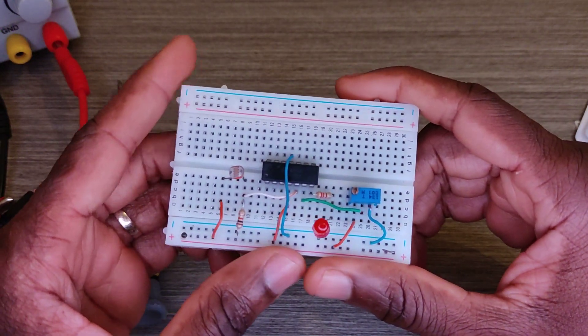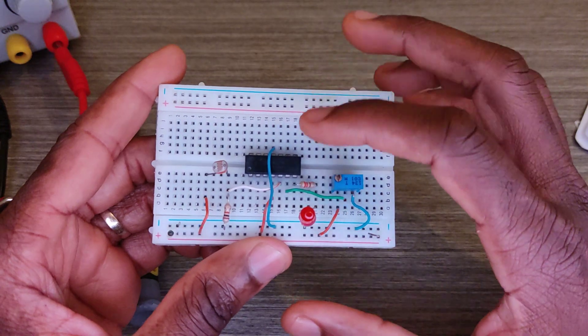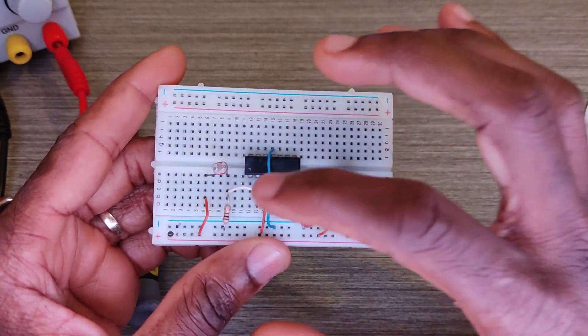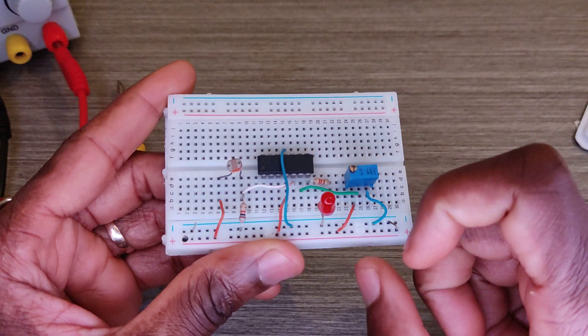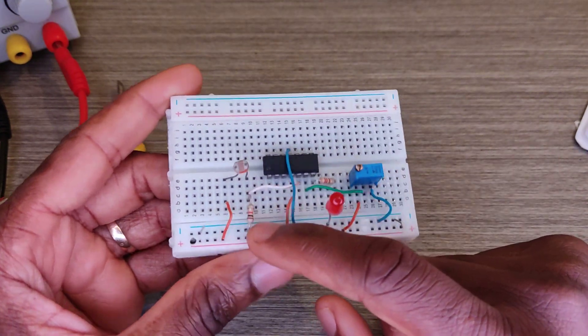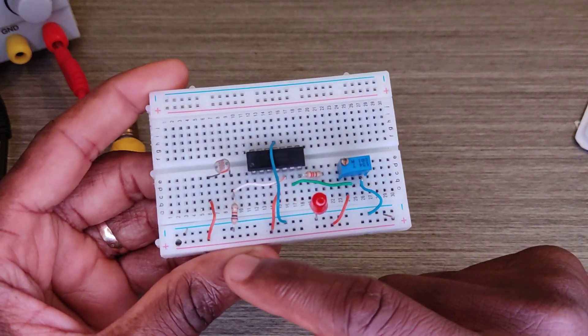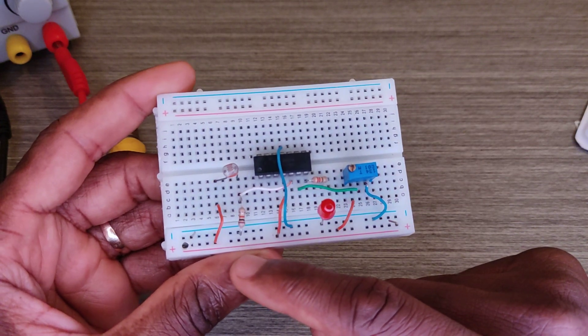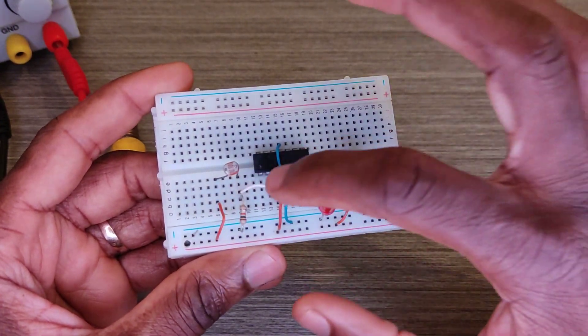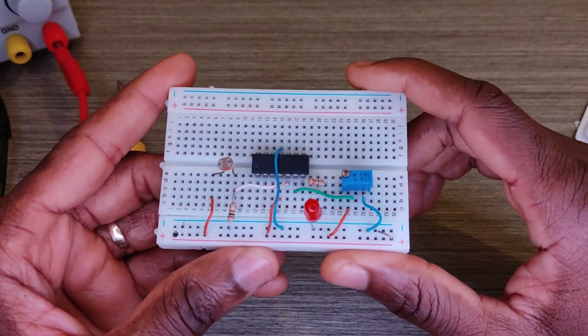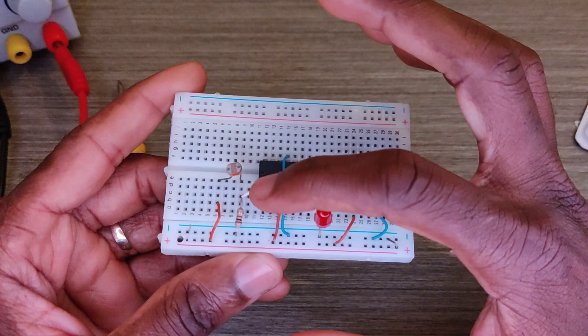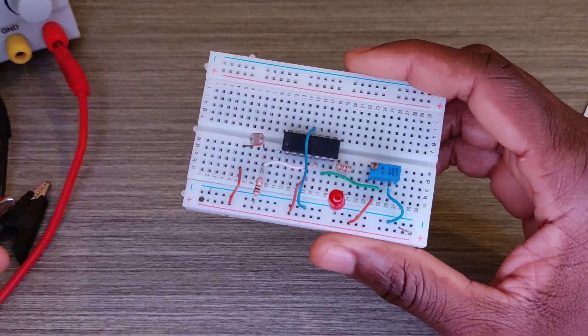That's forming a voltage divider with this 10 kilohm resistor which is going to ground. The voltage divider is going here to pin five of the IC. Pin five, the wire.